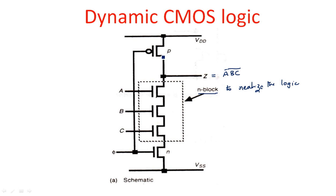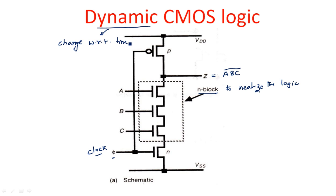The PMOS transistor in the pull-up and the NMOS transistor in the pull-down are both connected to a common input named phi — the clock signal. Why does the clock come into existence here? Because of the word 'dynamic.' Dynamic means changing with respect to time, and this is achieved by using a clock input, which continuously toggles between on and off periods — one, zero, one, zero.